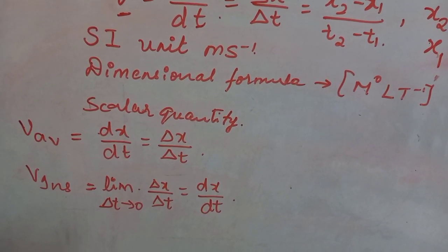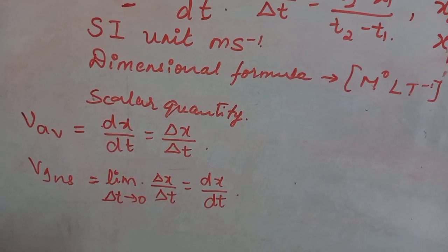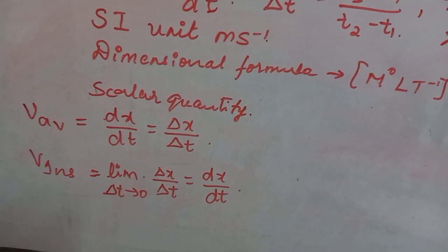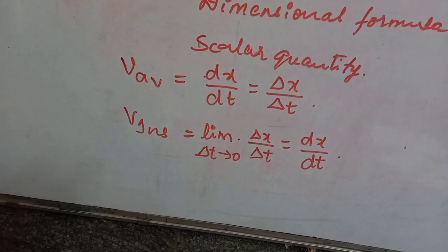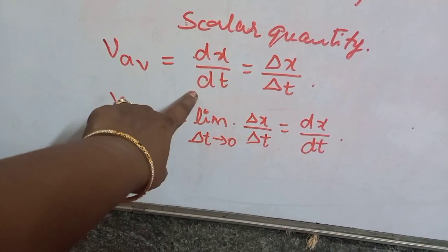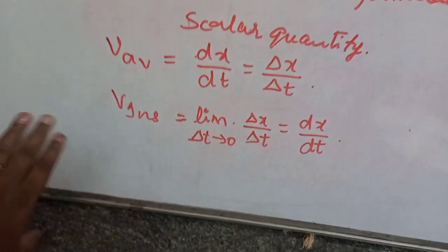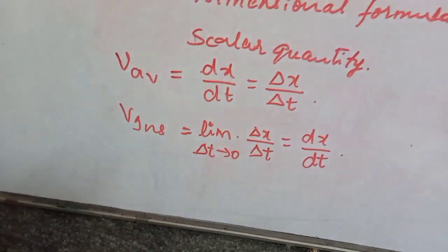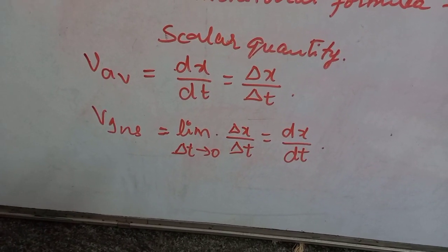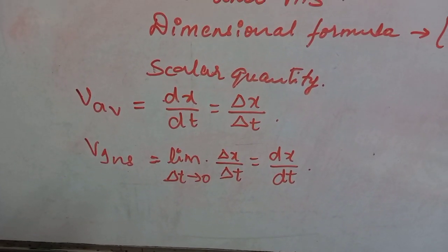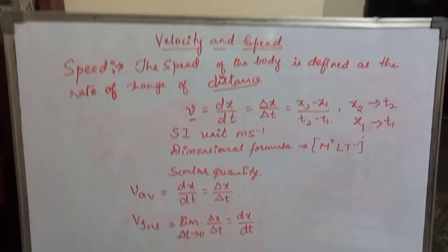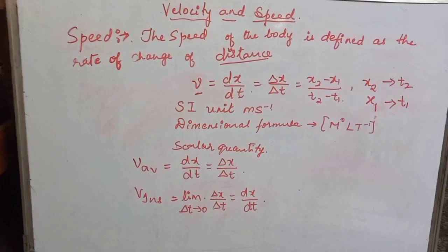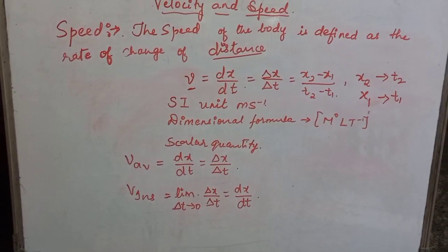It should be imprinted in your mind what scalar quantity and vector quantity mean as a student of physics. Average speed is v_avg = dx/dt = Δx/Δt, and for instantaneous speed we take the limiting value: lim(Δt→0) Δx/Δt.